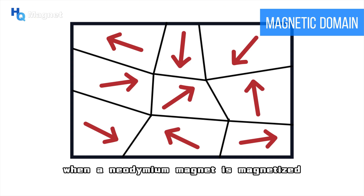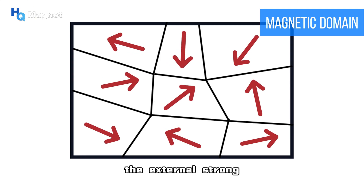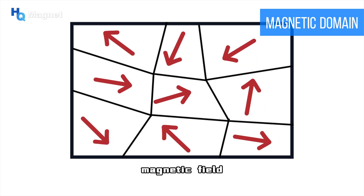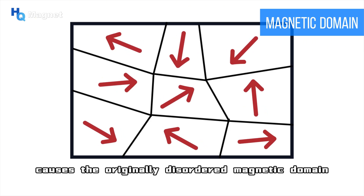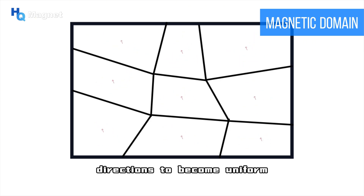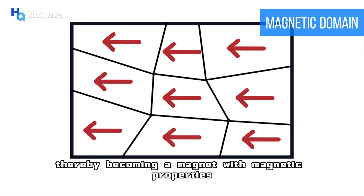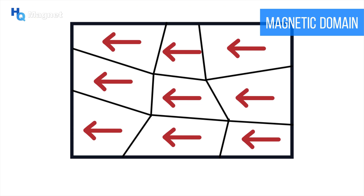When a neodymium magnet is magnetized, the external strong magnetic field causes the originally disordered magnetic domain directions to become uniform, thereby becoming a magnet with magnetic properties.